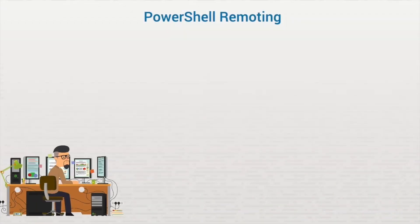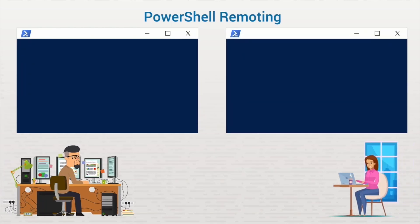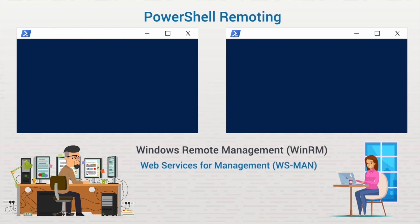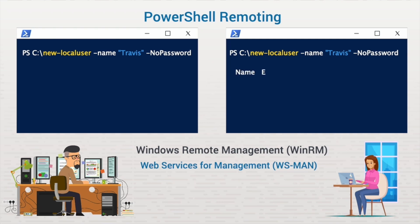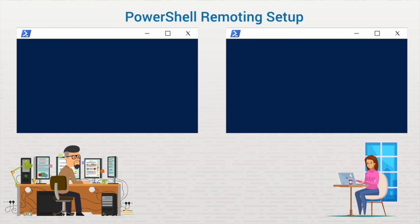PowerShell remoting connects an administrator's local PowerShell session with the remote system's PowerShell session. It uses the Windows Remote Management service, which is built on the Web Services for Management protocol. When the administrator runs a command in their local session, the command is sent to the remote computer and executed there, and the remote system sends the results back to the administrator's system. PowerShell remoting needs to be set up on the remote computers, not the administrator's machine.